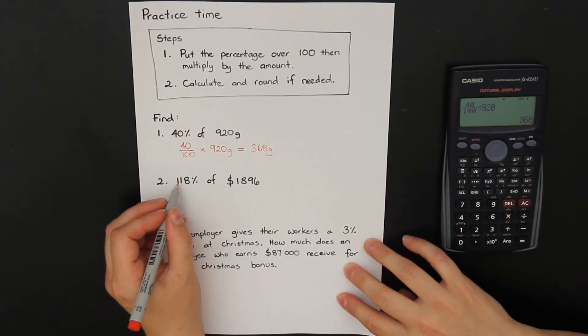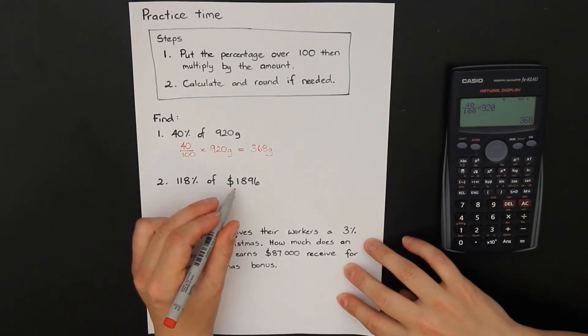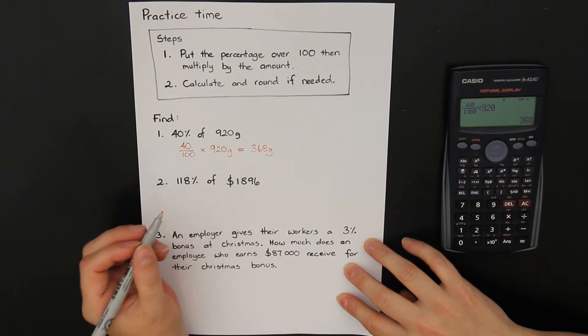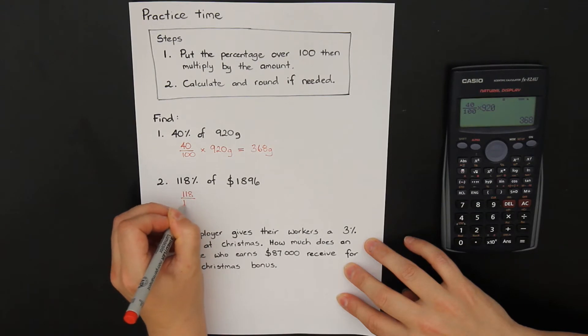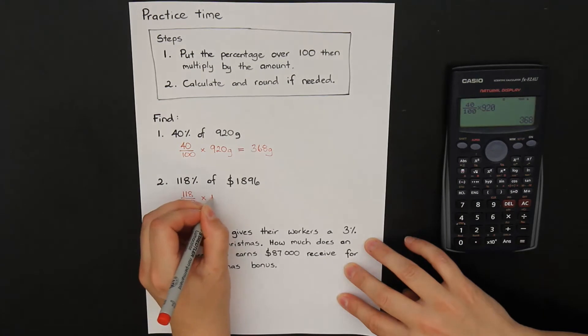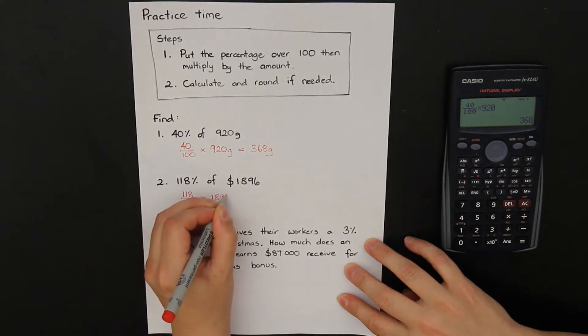Question 2. Find 118% of $1896. The percentage, 118 goes over 100, of means times by 1896.